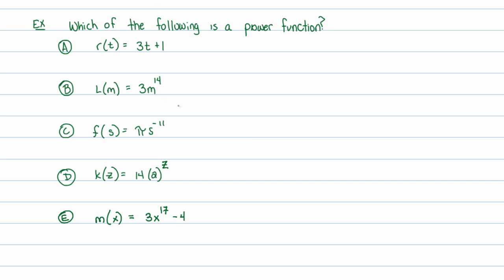Part A: Is that a power function? Well, it's a linear function — when graphed it's a line in mx + b format. But it's not a power function because it has an additional plus 1 on the end. It's almost like y = kx^p, but we have this illegal plus 1 at the end. We can't have an addition or subtraction at the end for it to be considered purely a power function.